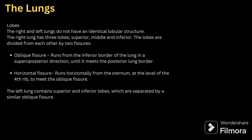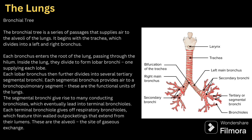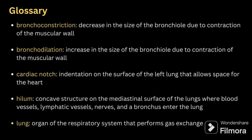Whenever you are explaining, try to add up a few points — you need at least 60 points to cover everything. Then you can say about the bronchial tree. The bronchial tree is a series of passageways that supply air to the alveoli of the lungs. It begins within the trachea, which is divided into right and left bronchus. Each bronchus enters the root of the lung, passing through the hilum. Inside the lung, they divide to form lobar bronchi, one supplying each lobe. You can see the image and read the description to understand.